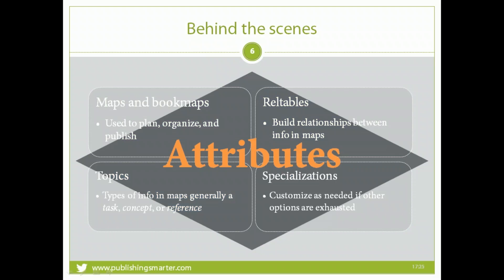Behind maps, book maps, topics, and specializations are attributes. If you've ever worked with HTML, you may know that an image element can be defined with things like a height, a width, or a source — and those height, width, and source values are considered to be attributes.